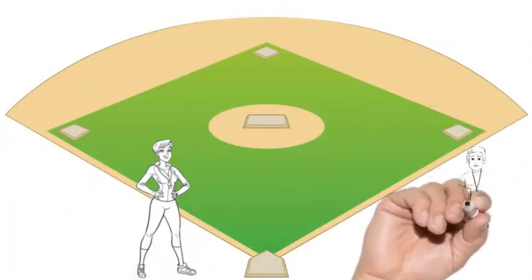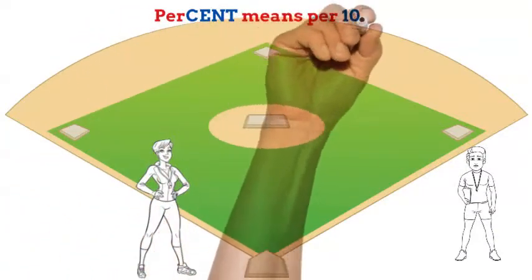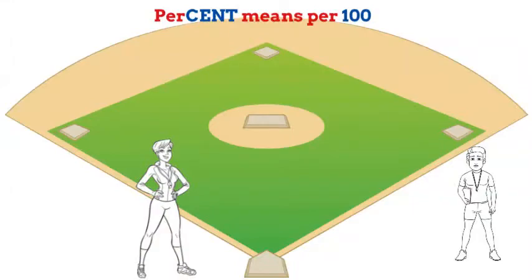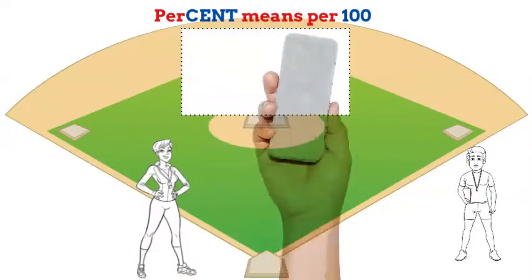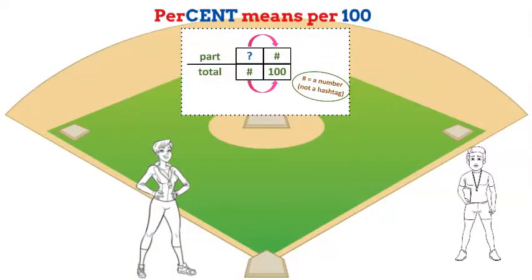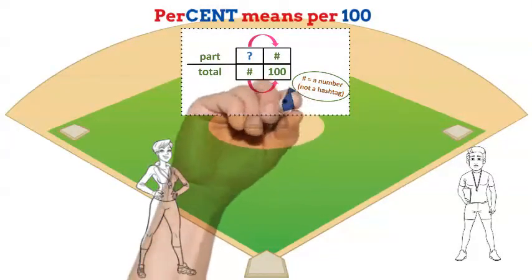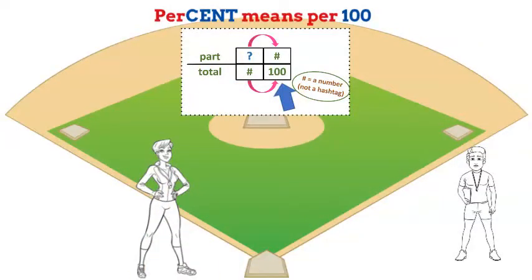Welcome to our training camp on percents. I'm Coach Hibbets and this is my assistant, Coach Flores. Remember, percent means per hundred. We're going to use proportions to solve percent problems, and to make it easy, we'll use this graphic organizer to set up our proportions. The ratio will always be part to total, and since we're working with percents, the bottom right number in the graphic organizer will always be 100.